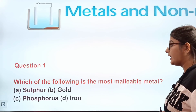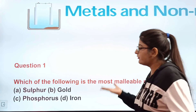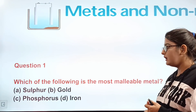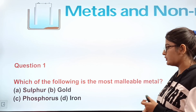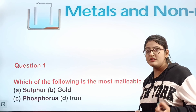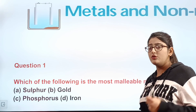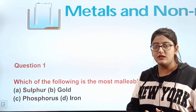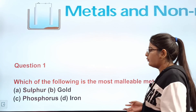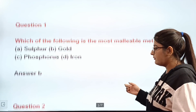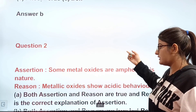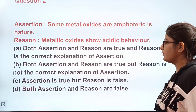The options are: A) Alpha, B) Gold, C) Phosphorus, D) Iron. I'm giving you time to tell me the answer in the comments, or write it in your notebook. The correct answer is B) Gold — gold is the most malleable metal.